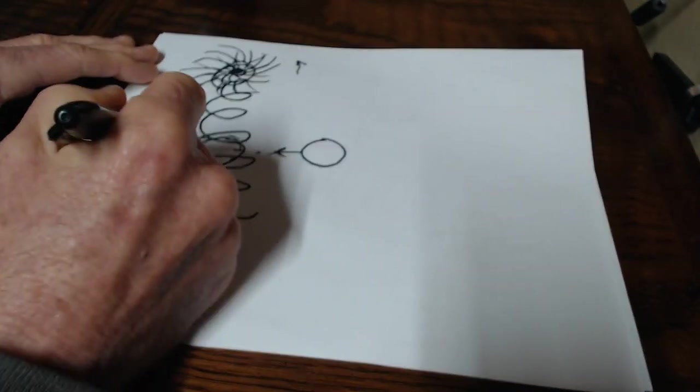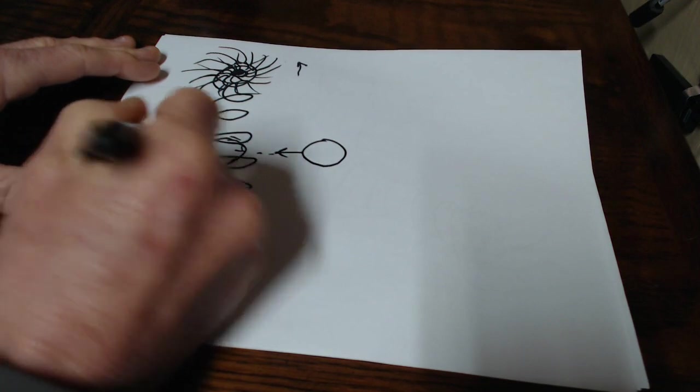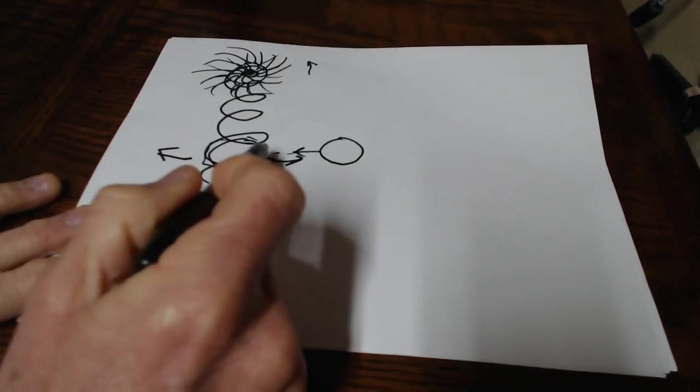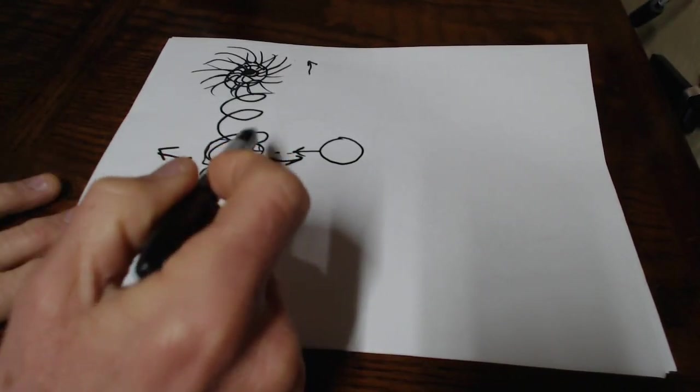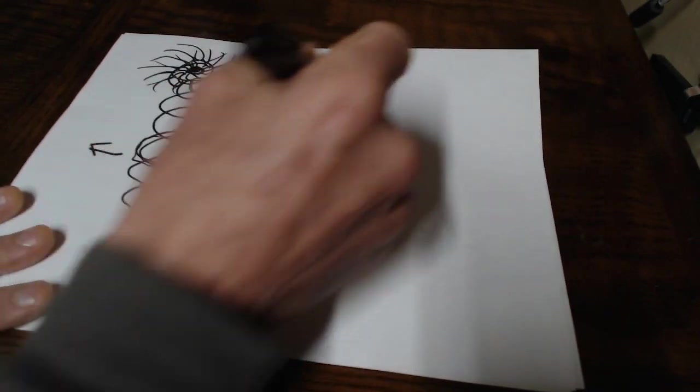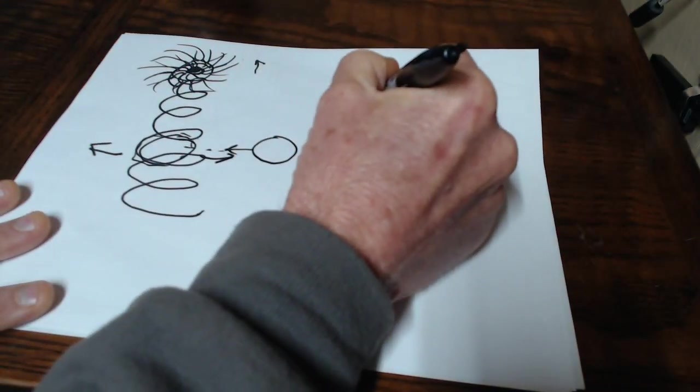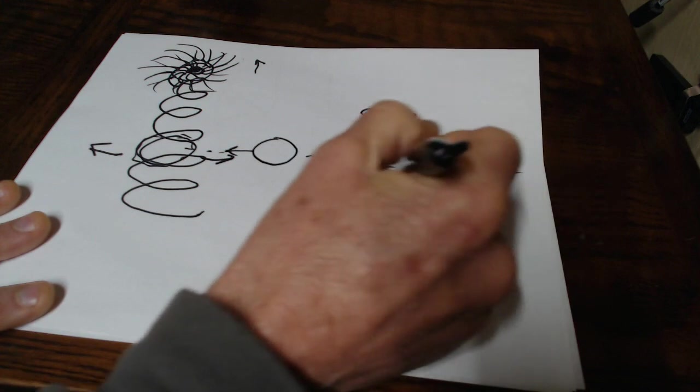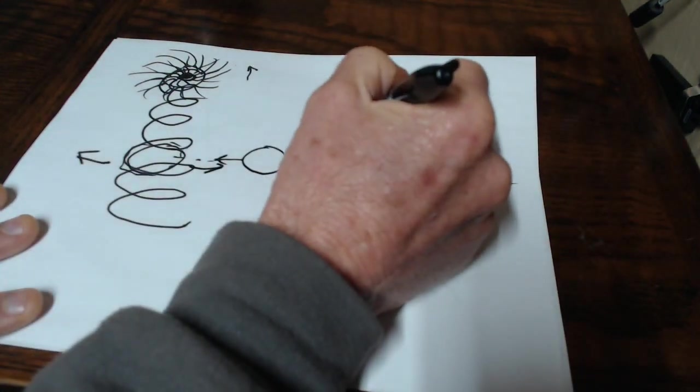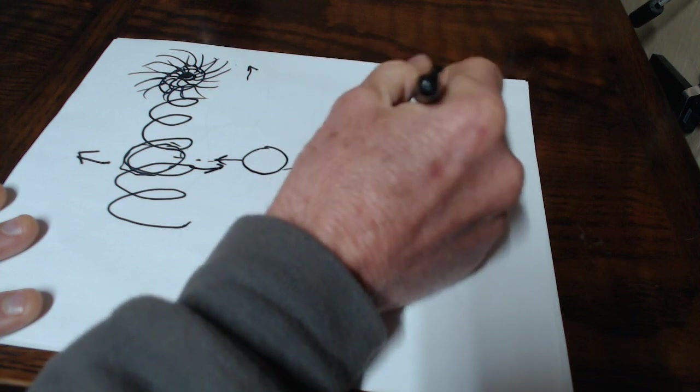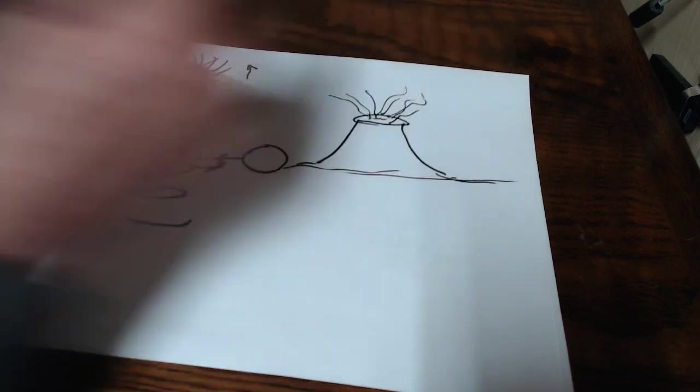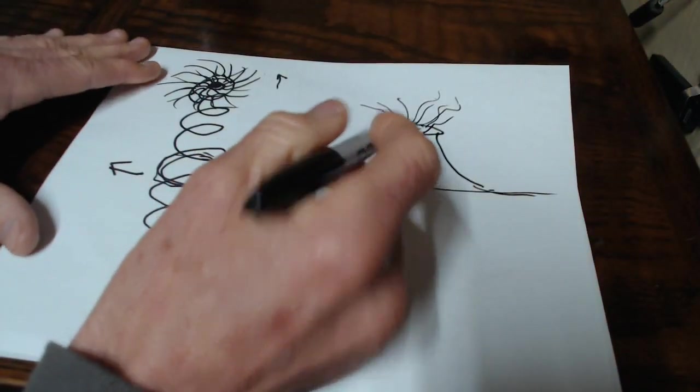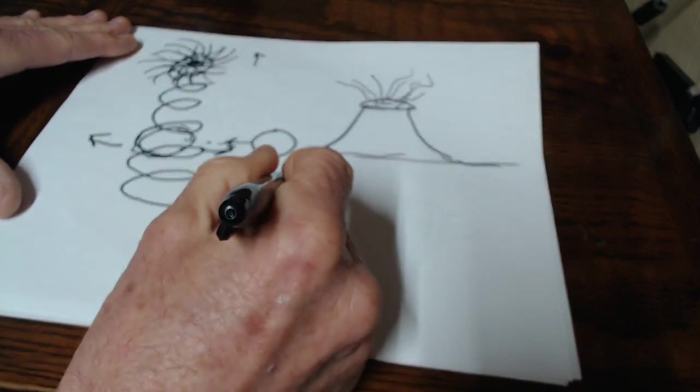Then a really interesting phenomenon of this is I'll see this shake back and forth. The Earth will shake back and forth like that. And then a lot of times what I'll get is images of a volcano erupting.